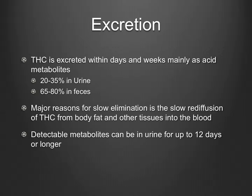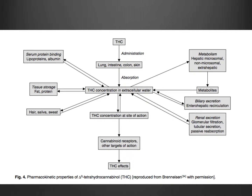The last part of pharmacokinetics is excretion. THC is excreted within days to weeks, mainly as acid metabolites — most in feces, although about a third is in urine. A major reason for slow elimination is the slow re-diffusion of THC from body fat and other tissues back into the blood, and detectable metabolites can remain in urine for up to 12 days or longer. This slide gives a general outline of what we've discussed: administration of THC, absorption through the lungs, intestine, colon, and skin, distribution to body tissues such as fats, proteins, and hair, and then metabolism by hepatic microsomal and non-microsomal processes.